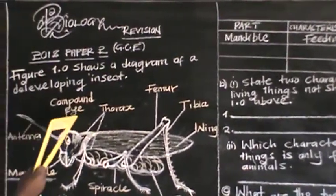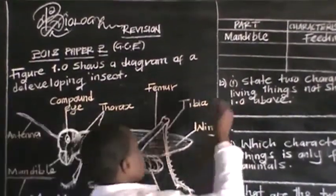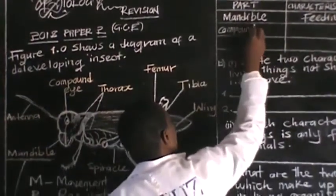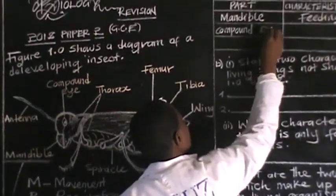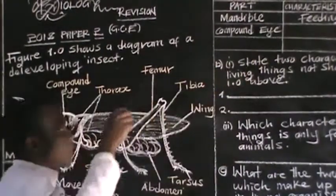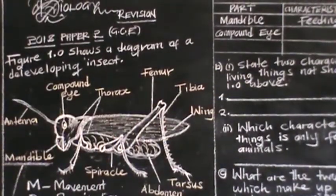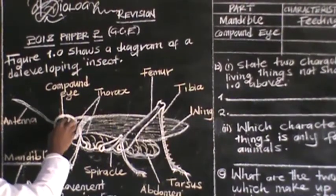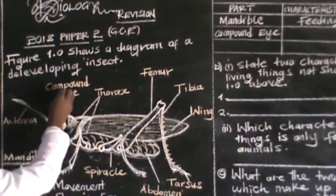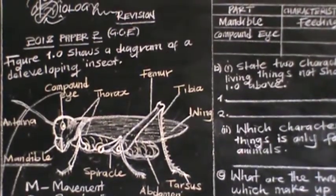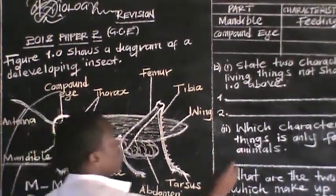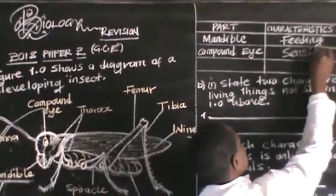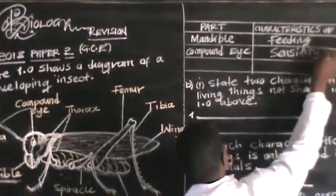Which other parts can we identify? The eye — the compound eye. The compound eye is a sensitive organ. So the compound eye is associated with sensitivity.